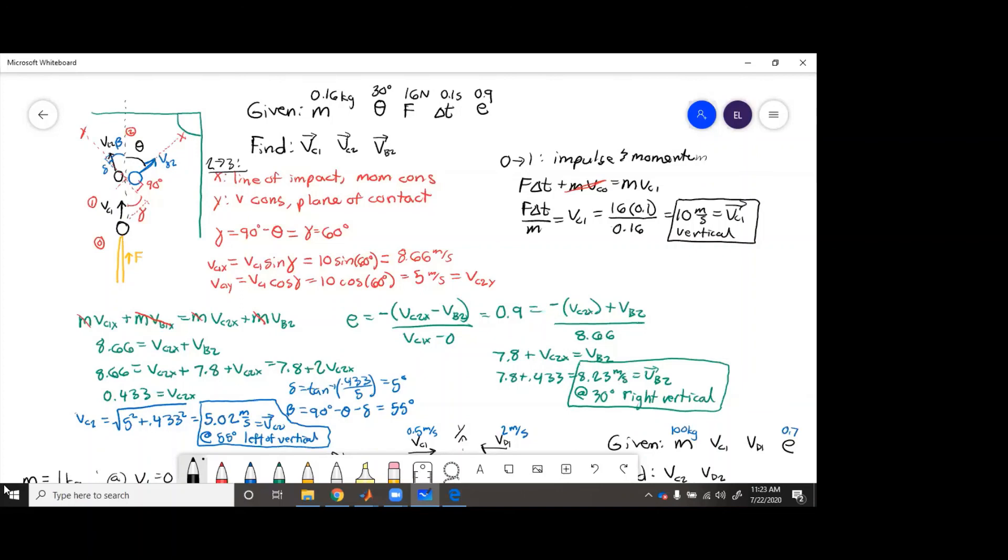And then the x direction, that was a little more complicated. We had the conservation momentum equation and the e equation. So we just put numbers in and solved out for vb2 and vc2x.